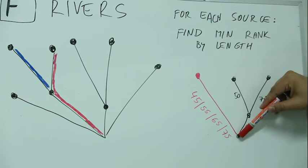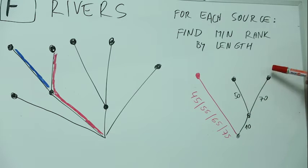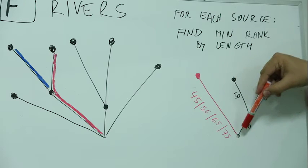If this is 55, what we can do is we can end this river here so its length will be only 50 and this one will be 80, so this river will actually be the second longest.